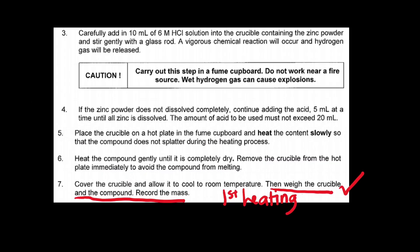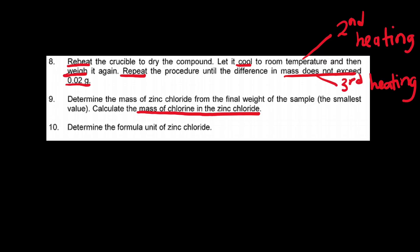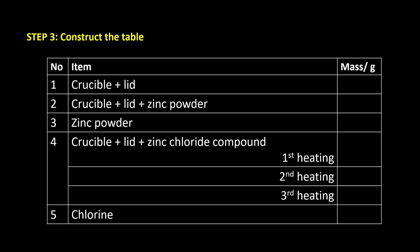The third item is zinc powder and we would like to determine the mass of zinc powder. The fourth item that we are interested in is the crucible, lid, and the compound after first heating — we would like to record their mass. We are also interested in the masses of the crucible, lid, and the compound after second and third heating. The fifth item that we are interested in is chlorine — we would like to know the mass of chlorine from the zinc chloride compound. After we have identified all the items of interest and their physical quantities, we can construct the table by listing out the items of interest and a column to record the physical quantity that we are going to measure.